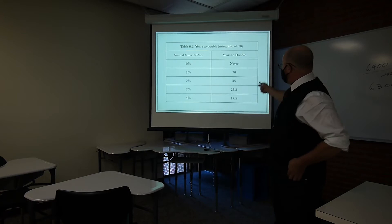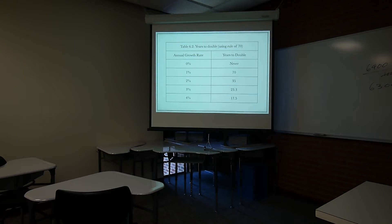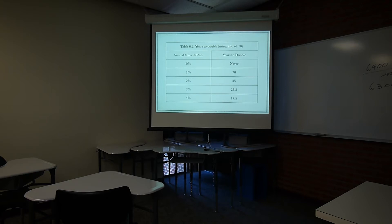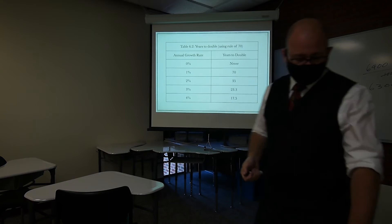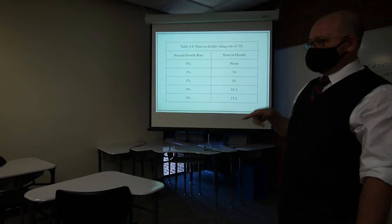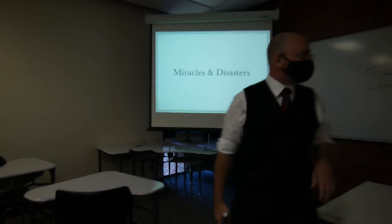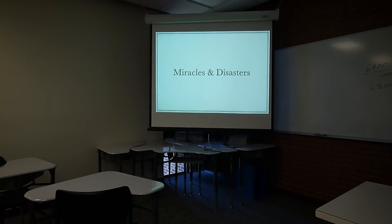Going from one percent to two percent annual growth — at one percent we'd only have had three doublings during this period. A one percent annual growth rate change makes the difference between 700% aggregate growth and 6,300% aggregate growth. Obviously if we could go to three percent, even better; ten percent, even better. This is also a useful way to think about mortgages and other things. 70 divided by the growth rate tells you the number of years to double; you can also transform that — 70 divided by the number of years to double gives you the required growth rate.